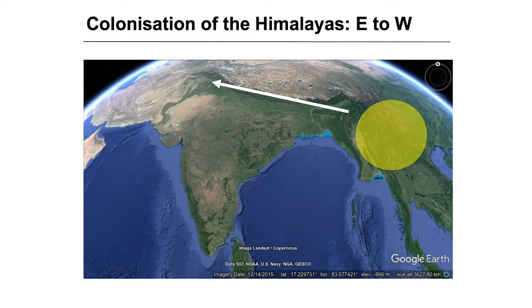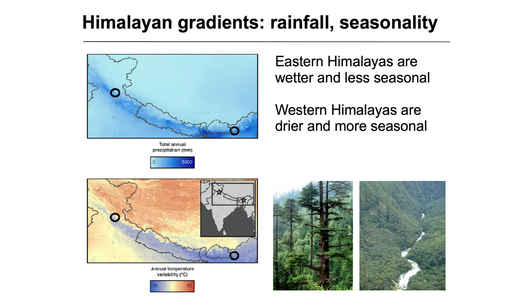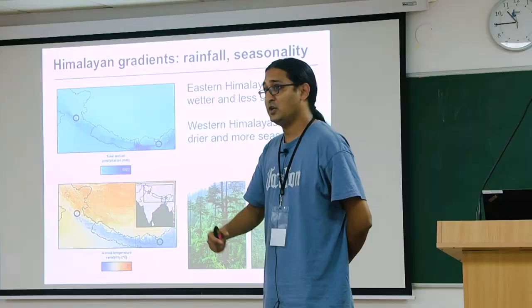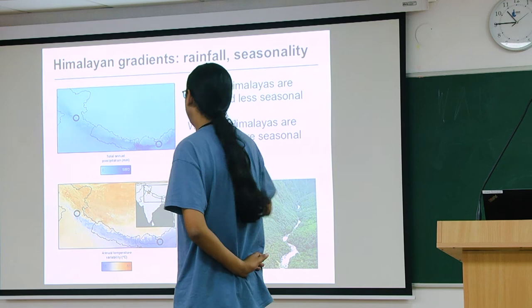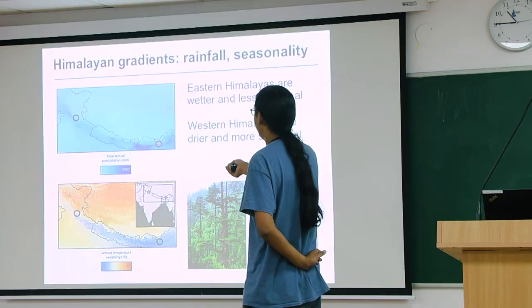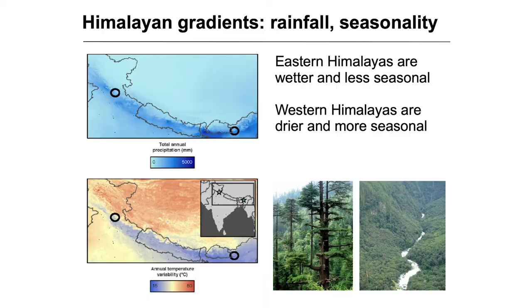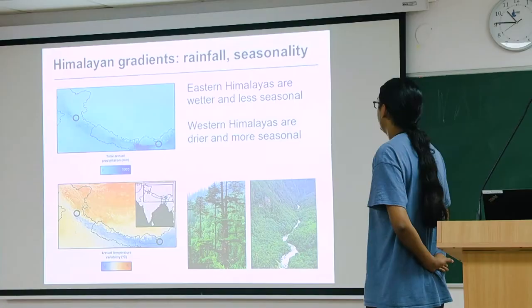The Himalayas show very strong gradients in temperature and rainfall. The Western Himalayas are much drier and more seasonal than the Eastern Himalayas. The difference in temperature between summer and winter is much higher in the Western Himalayas. The Eastern Himalayas are wetter, with much higher precipitation in the East than in the West. And annual temperature variability in the East is very low, but as you go West, the difference between summer and winter temperatures rises greatly. So the East is warm and wet; the West is seasonal and dry. This influences how birds have moved from East to West.